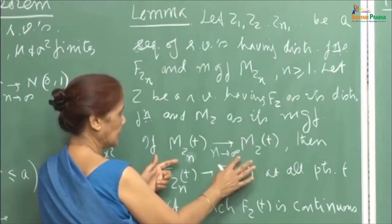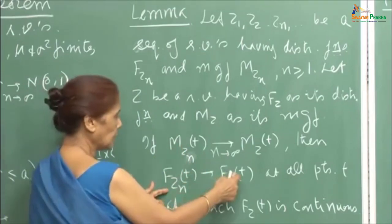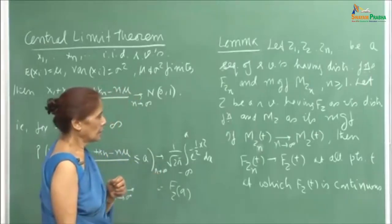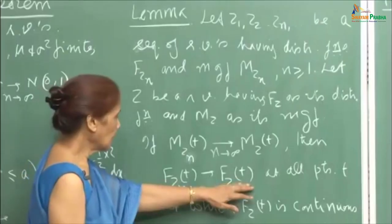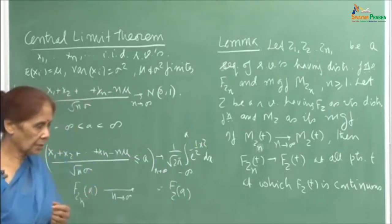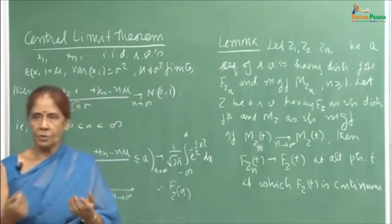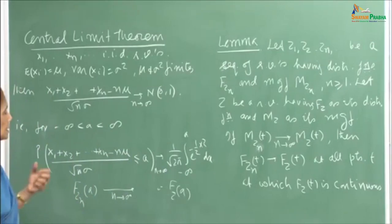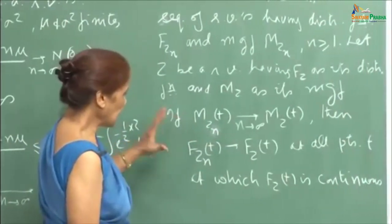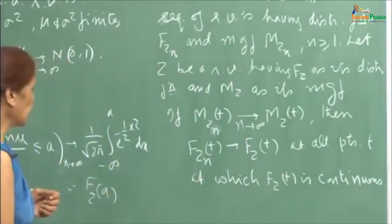The distribution function of Zₙ, which is F_{Zₙ}(t), will converge to the distribution function of Z at all points where F_Z(t) is continuous. This expresses the uniqueness of the MGF — the MGF uniquely determines the density or distribution function, because once you get an MGF you can uniquely fix the distribution.